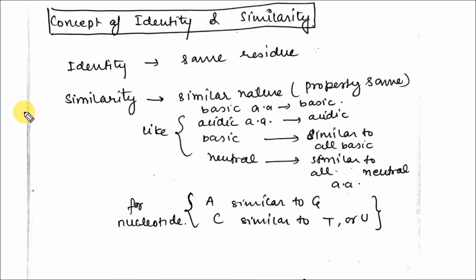Let's see the concept of identity and similarity. Identity means the residues must be the same, either it is nucleotide or amino acid residues. This must be same in the query sequence and the comparing sequence. For similarity, both residues must be similar in nature. That is, their property must be the same or nearly the same. Like basic amino acids such as arginine or histidine are similar to lysine, acidic glutamate is similar to aspartate, and neutral amino acids like leucine are similar to isoleucine. Similarly for nucleotides, adenosine is similar to guanosine because it is a purine, and cytosine is similar to thymine or uracil because it is a pyrimidine.